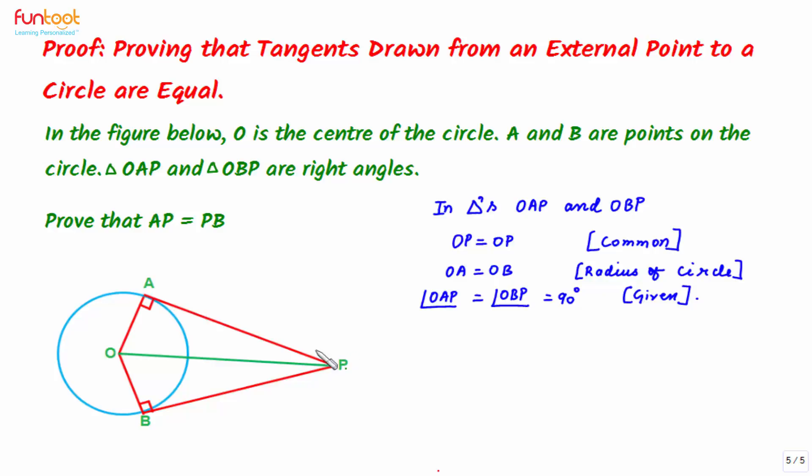If we see, in triangles OAP and OBP, both are right-angled triangles. Hypotenuses of both of them are equal, and one pair of sides is also equal: OA is equal to OB.